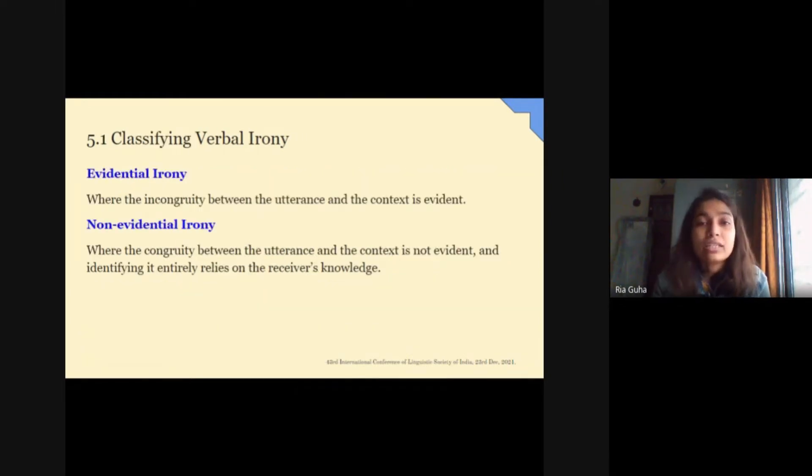We have categorized verbal irony in two ways based on evidentiality. Suppose you are outside with a friend and it's 40 degrees centigrade and she says, oh, it's freezing. You will know it as verbal irony as the incongruence between the utterance and context is evident. We call it evidential verbal irony. While this incongruence is not evident and you have to rely on your knowledge, we have called it non-evidential verbal irony. The rest of this paper is mainly based on this second type.